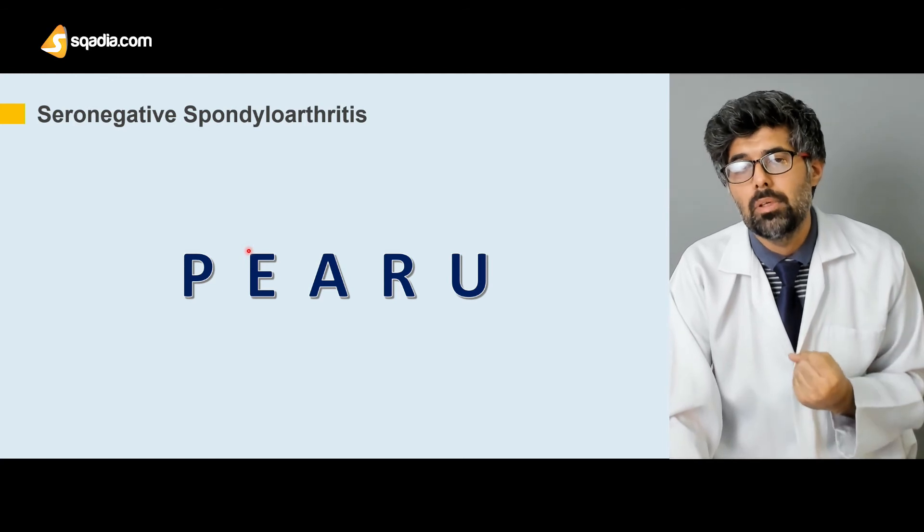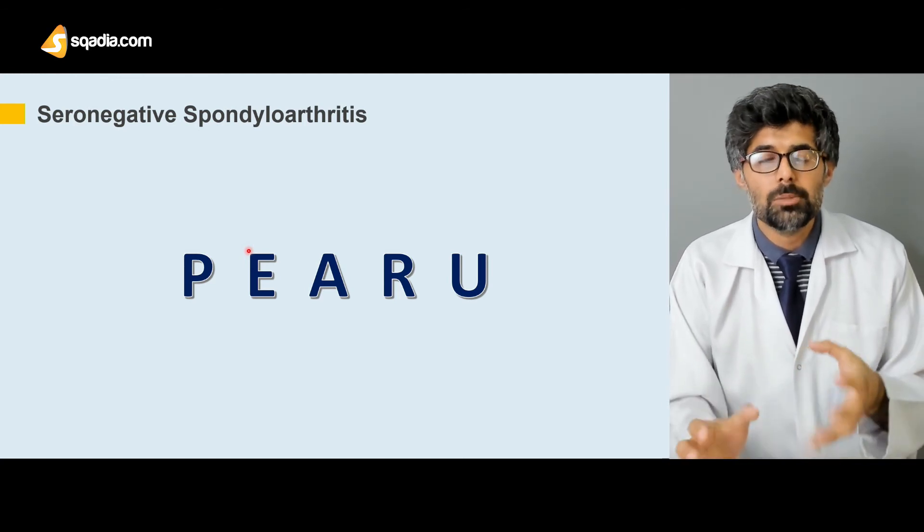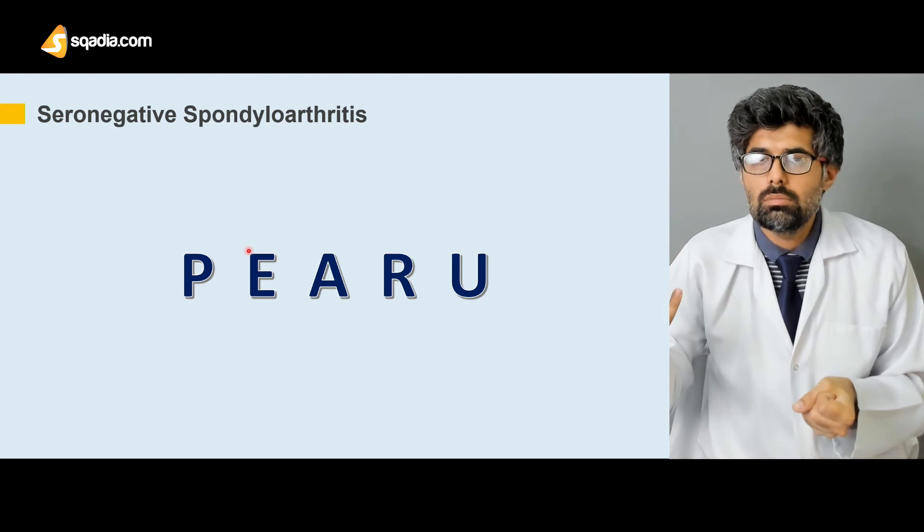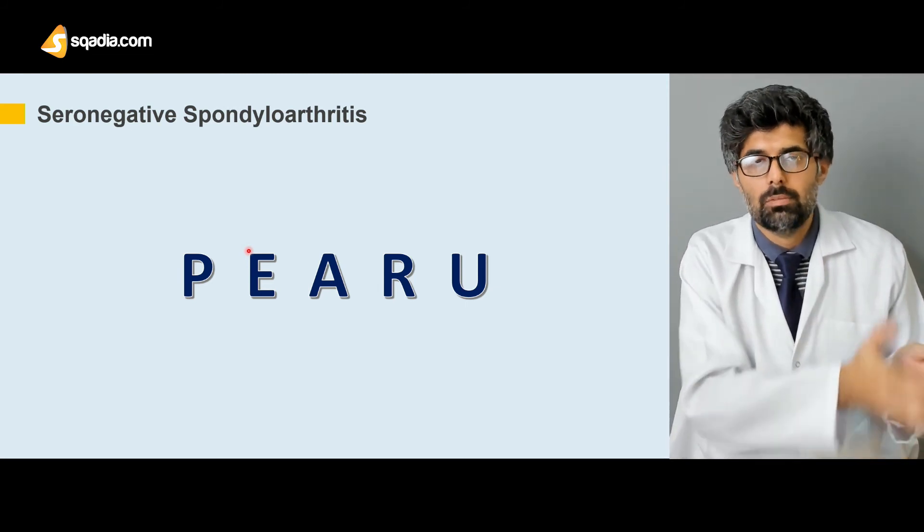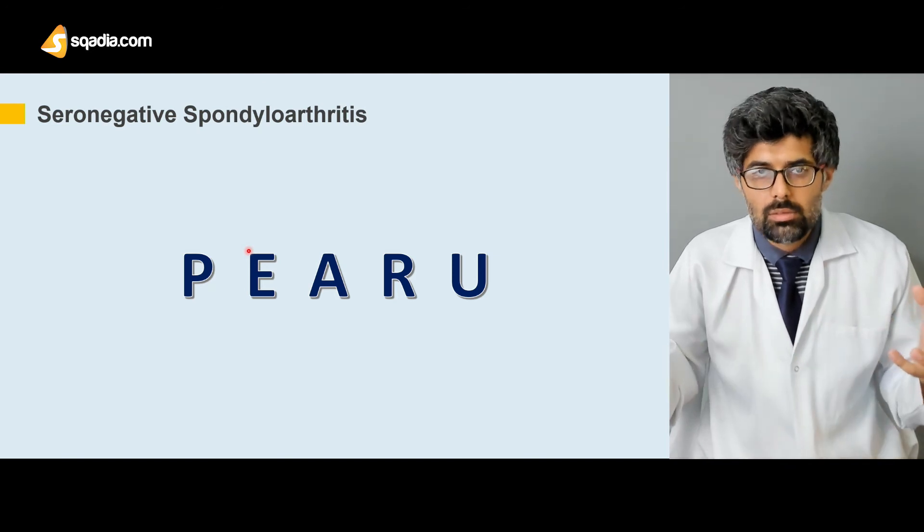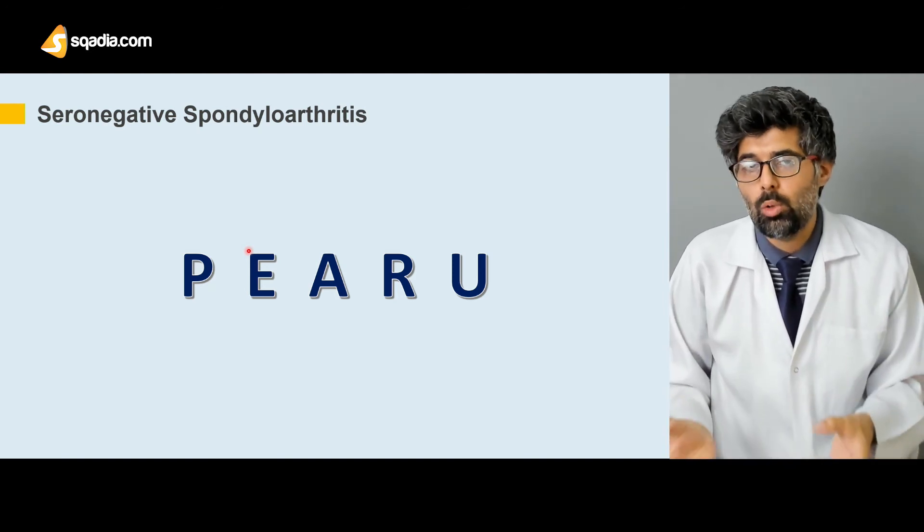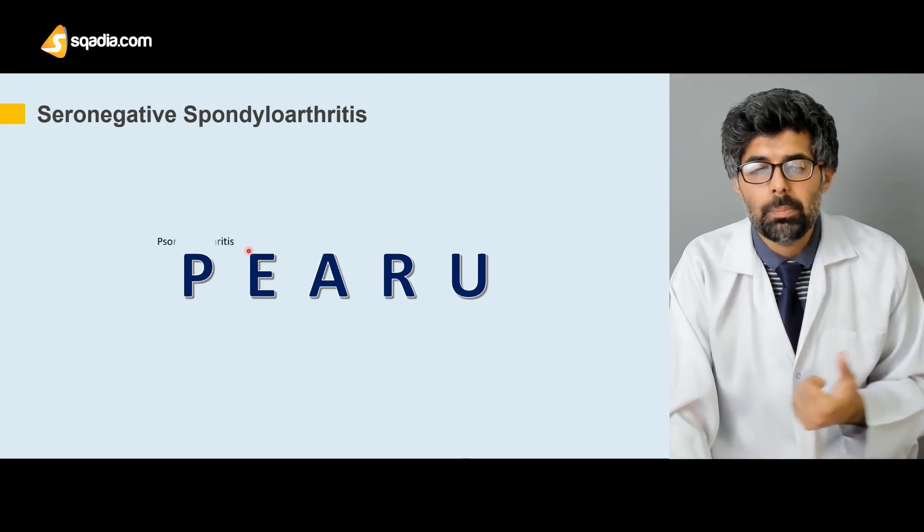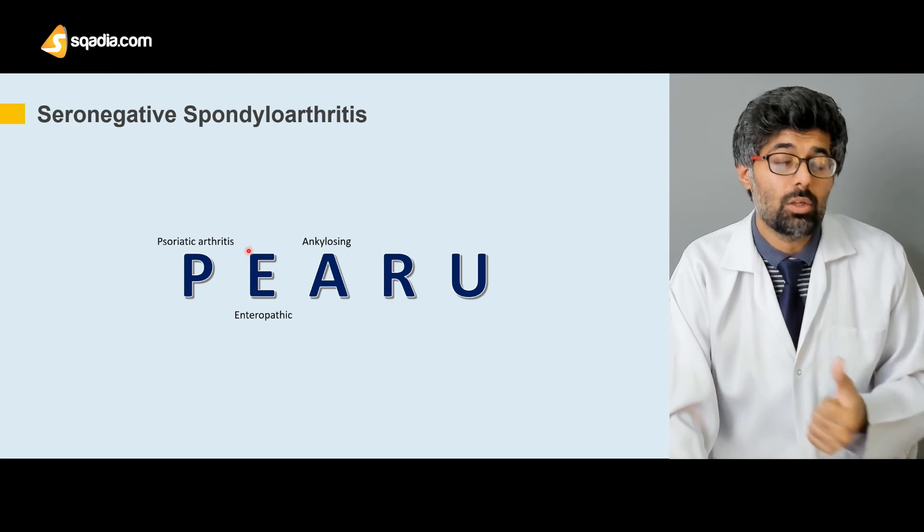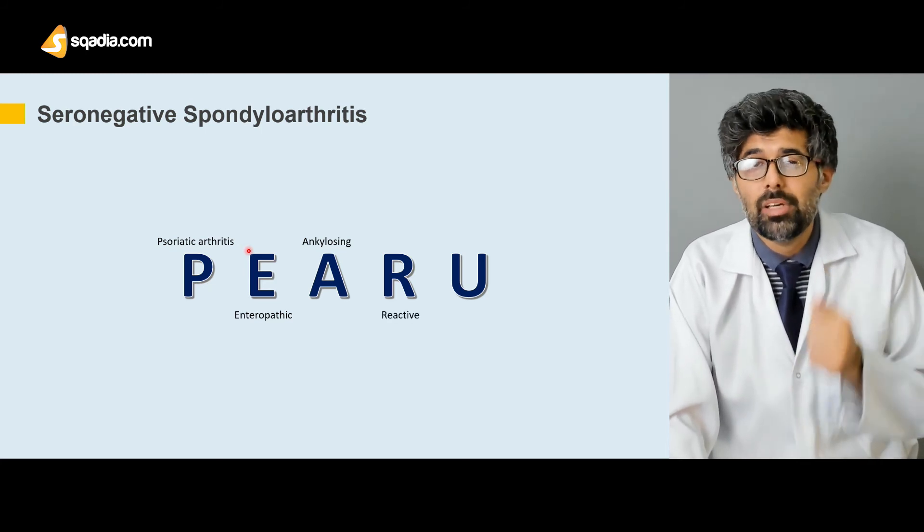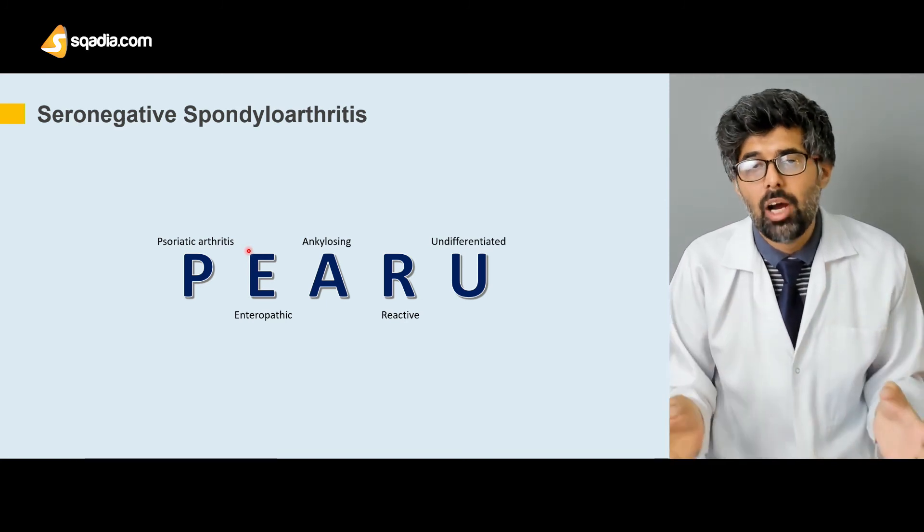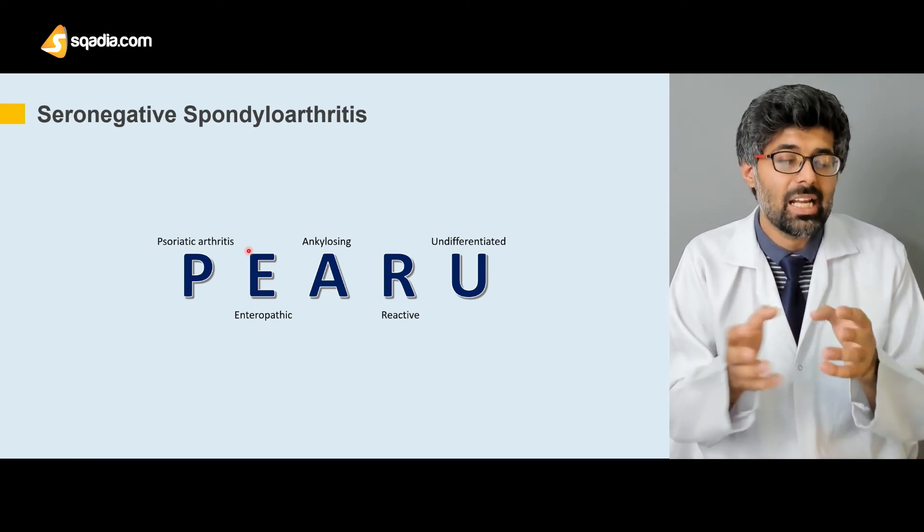These seronegative spondyloarthritides can be easily remembered by the mnemonic PERU. This PERU can be used both as a mnemonic and to remember the cluster from their severity to their complication, and as an easy way to remember all of the seronegative spondyloarthritides. P stands for psoriatic arthritis, E stands for enteropathic, A for ankylosing spondylitis, R for reactive spondylitis, and U for undifferentiated spondylitis. These are the same five which we discussed earlier but presented as a mnemonic.